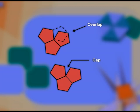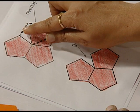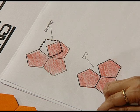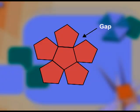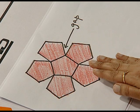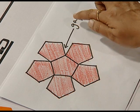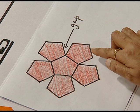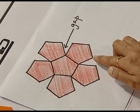Why is that? Because when we place the pentagons together, either it results in a gap, or if we try to cover the gap, it results in an overlap. So even though I am able to get a design, because of the resulting gaps it cannot be said to be a tessellation.